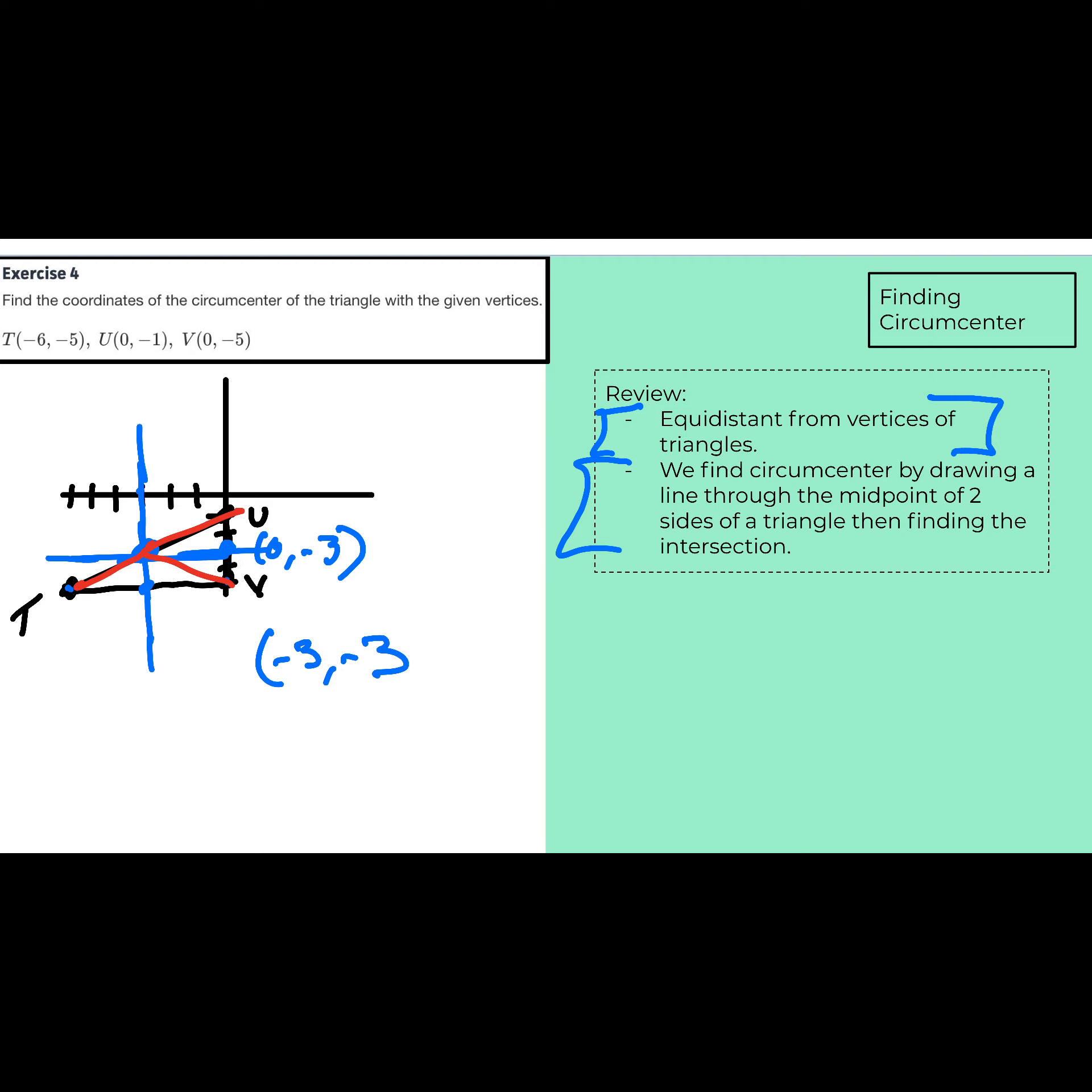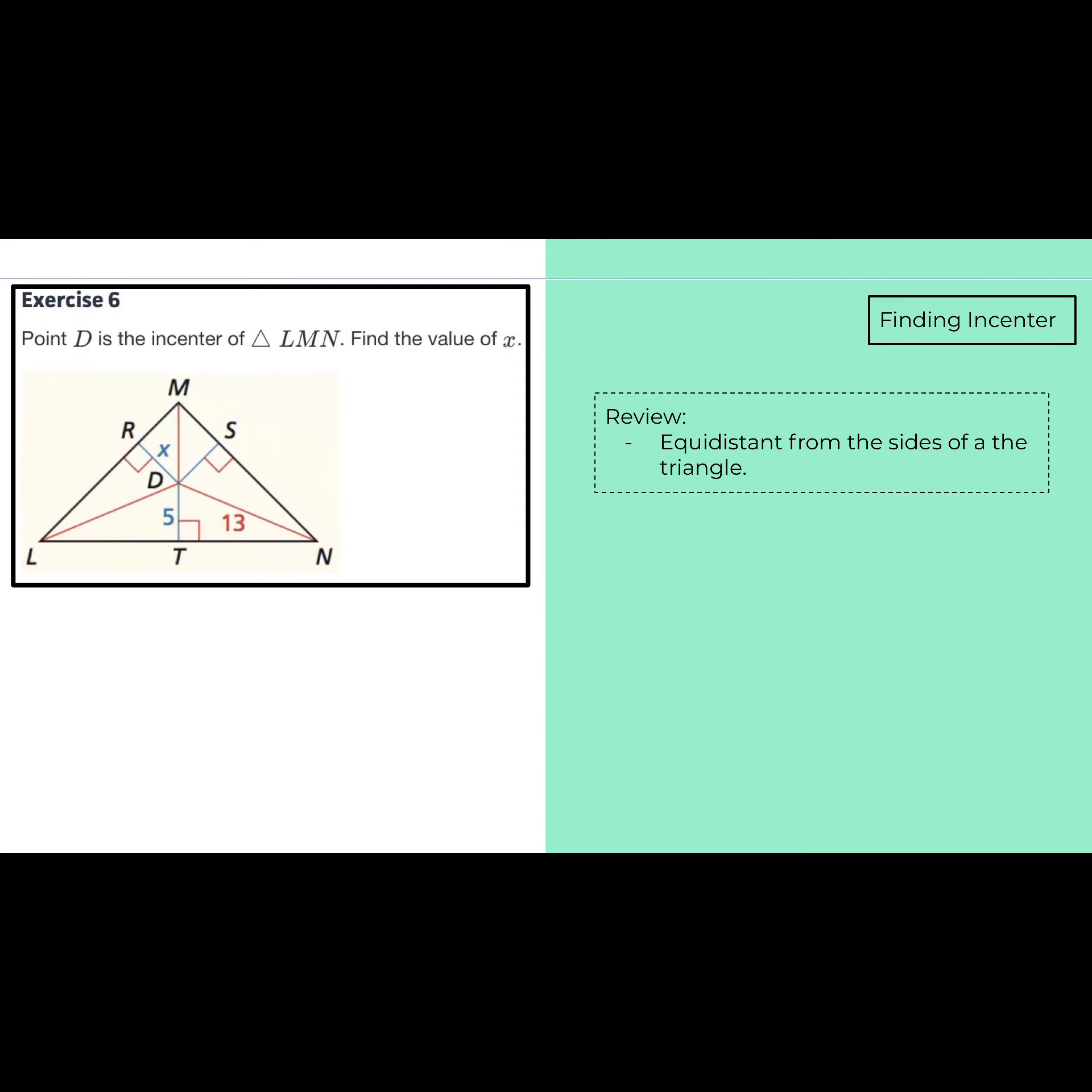So, that would be an example of circumcenter. We good? Is anyone else writing stuff down, or are we good to move on? All right. Incenter. So, remember, the incenter is equidistant from the sides of the triangle. So, those blue lines are all the same. Now, we didn't really find incenter, right? With incenter, they gave us an image, and then we just had to know the relationship that the incenter had to find other things. So, if they asked us to find x, what would x be? x would be 5.